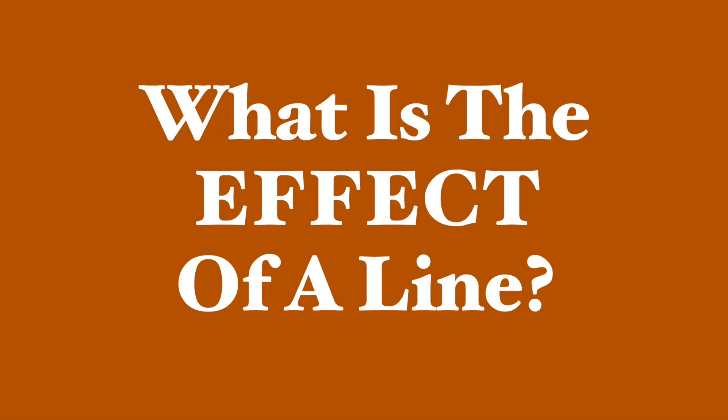So once you realize that dialogue is action, the inescapable next question becomes: what is the effect of a line? Does it do what the speaker intended? If not, what effect does it have? When a character speaks, they're trying to accomplish something, to make something happen. So then what? Did it work? How? What action does it provoke in the person they're speaking to? And if it didn't work, what does the character do about that?